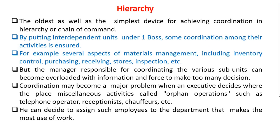The next one is hierarchy. It is the oldest as well as simplest device for achieving coordination — also known as the chain of command. By putting interdependent units under one boss, coordination among their activities is ensured. For example, several aspects of materials management including inventory control, purchasing, receiving stores, inspection, etc. However, the manager responsible for coordinating the various subunits can become overloaded with information and forced to make too many decisions.